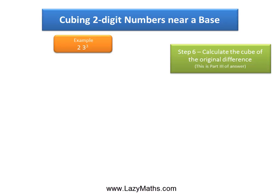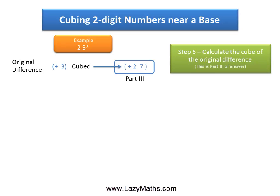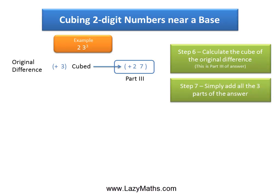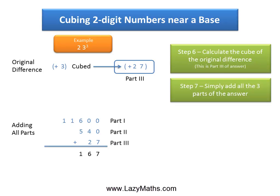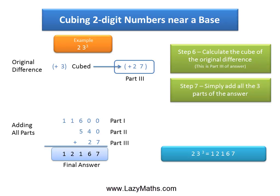For part 3, we cube the original difference: positive 3 times positive 3 times positive 3 gives us positive 27. So positive 27 becomes part 3 of the answer. In the last step, since all parts are positive, we add them all together and get the final answer: 12,167. So 23 cubed equals 12,167.